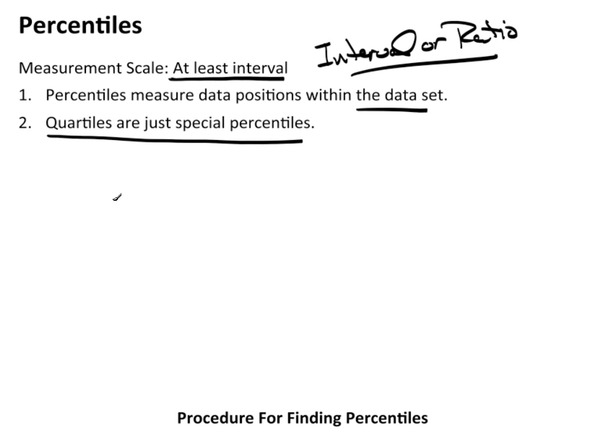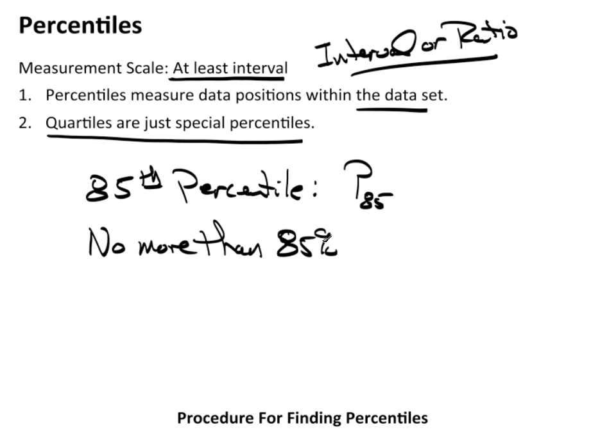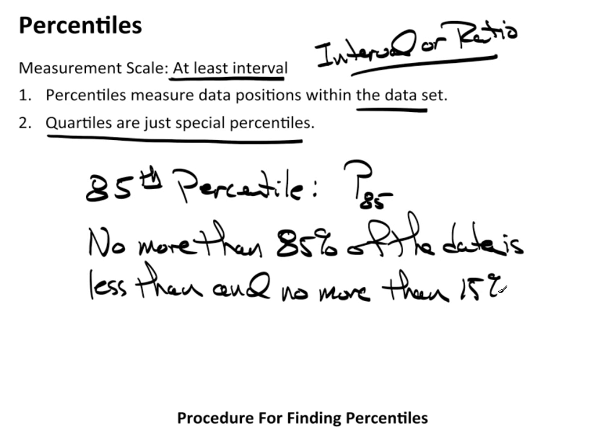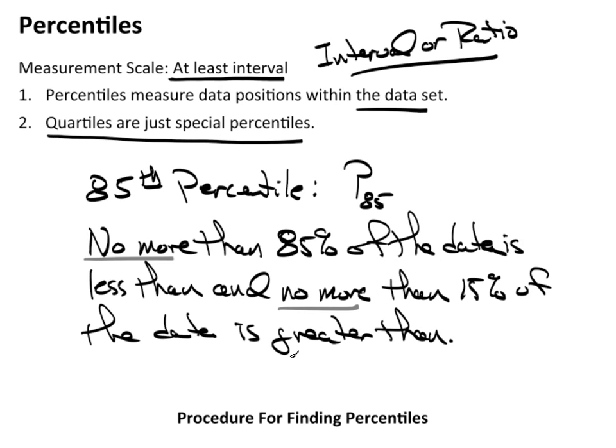The typical notation for percentiles, and normally we only talk about the sample percentiles, is if I wanted to say the 85th percentile, we would write this as P85. And what that means by definition is no more than 85% of the data is less than and no more than 15% of the data is greater than. And this idea of no more is really important, and I will get into more details about that when I do this example.